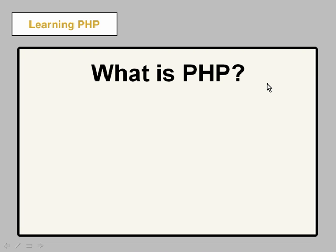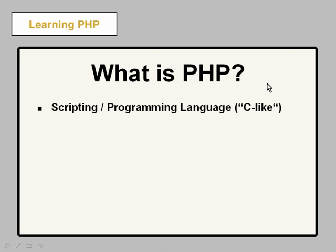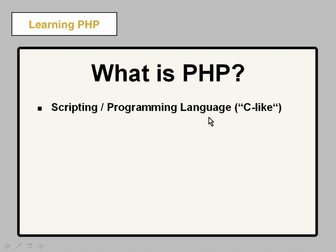So what is PHP? PHP is a scripting language, and it's also a programming language, and it's very C-like. It's based on the C programming language. Scripting languages generally don't compile, and this is the case with PHP. But as a programming language, we know that programming languages can be very, very powerful. That's what PHP is. It's extremely powerful.